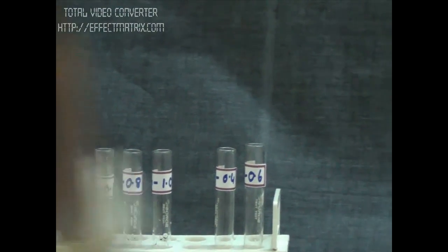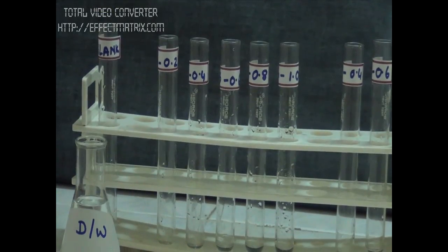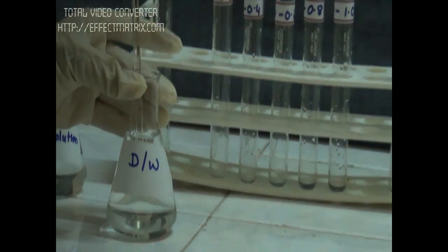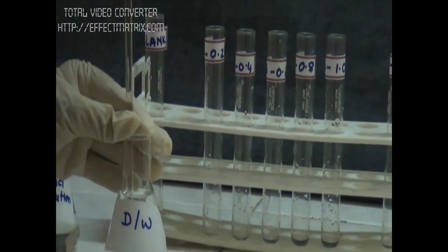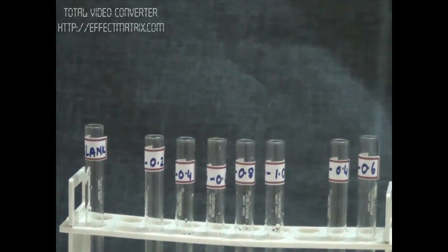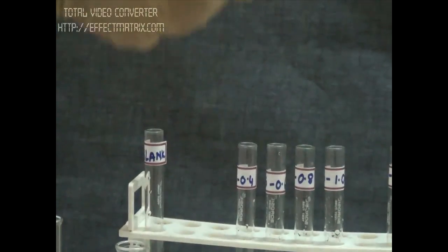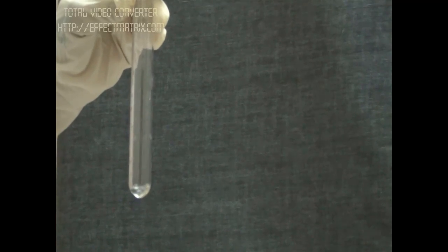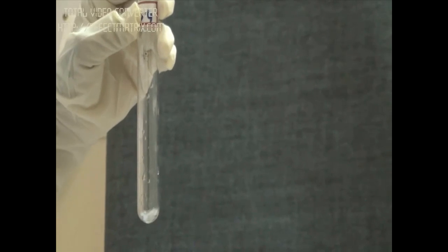Now we will make the level of all the aliquots equal by adding distilled water. In the next tube, we have 0.4 ml of standard, so I will add 0.6 ml of distilled water.